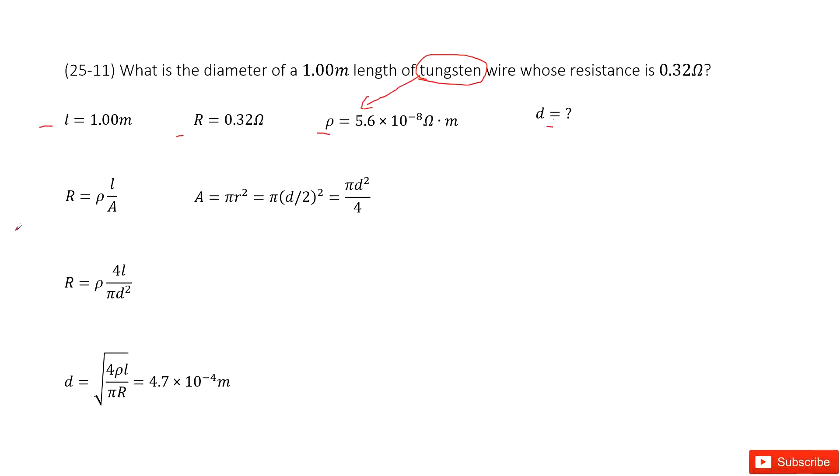We can consider the function for resistance. The function for resistance is rho times L divided by A. And A can be written as pi r squared. Then we input r as d over 2. This is diameter divided by 2 to be radius.